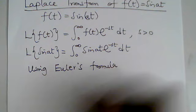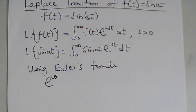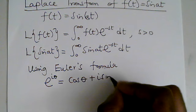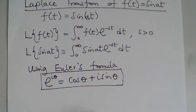Euler's formula tells us that e^(iθ) = cos(θ) + i·sin(θ). From Euler's formula we can see that sine is the imaginary part of this exponential function, and cosine is the real part. So what we are going to do is make use of this — in place of sine we want to pick the imaginary part.